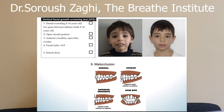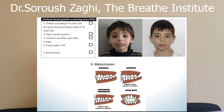The next sign is malocclusion, otherwise known as crooked teeth and dental crowding. If you have an overbite, an underbite, an openbite, or any dental crowding, this is a sign of craniofacial abnormalities. The need for braces is unnatural and means you have craniofacial abnormalities.